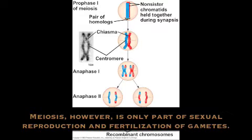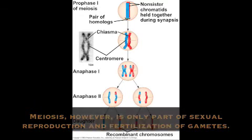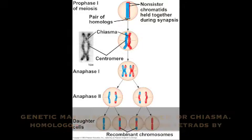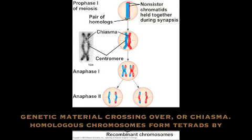Meiosis, however, is only part of sexual reproduction and fertilization of gametes. Meiosis goes through two cell divisions. The first, meiosis I, involves a site of genetic material crossing over, or chiasma.